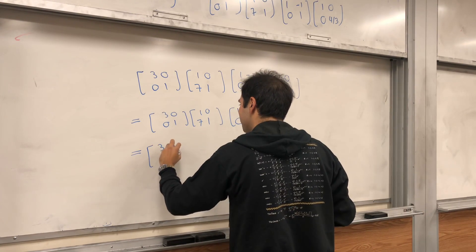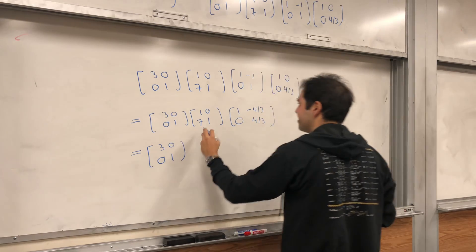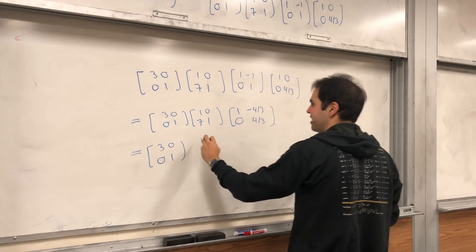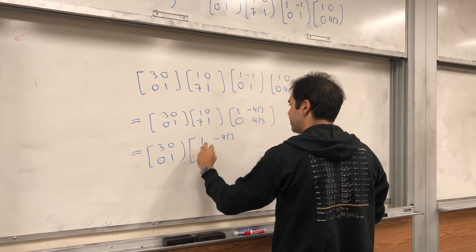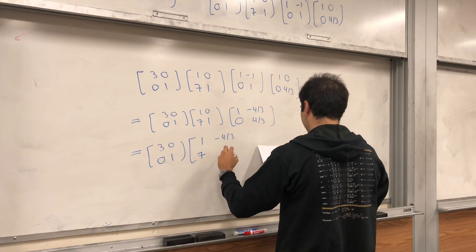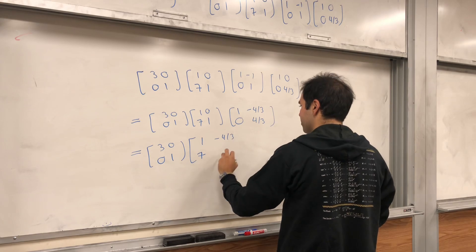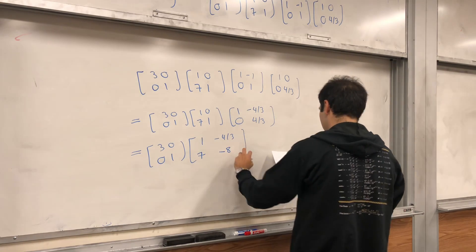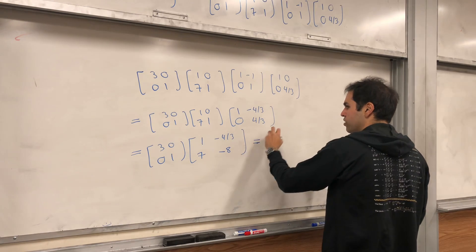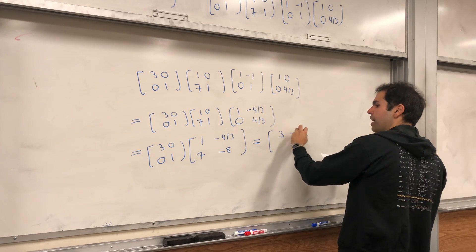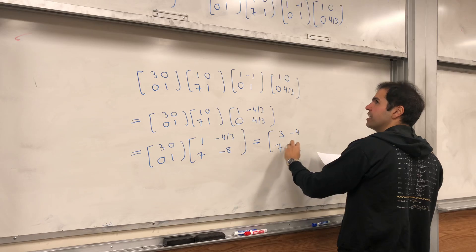And then, essentially, what this means, you add 7 times the first row to the second row. So, 1 minus 4 thirds. And then, 7. And then, I guess, minus 8. And, lastly, if you multiply the first row by 3, you do get 3 minus 4, 7 minus 8.